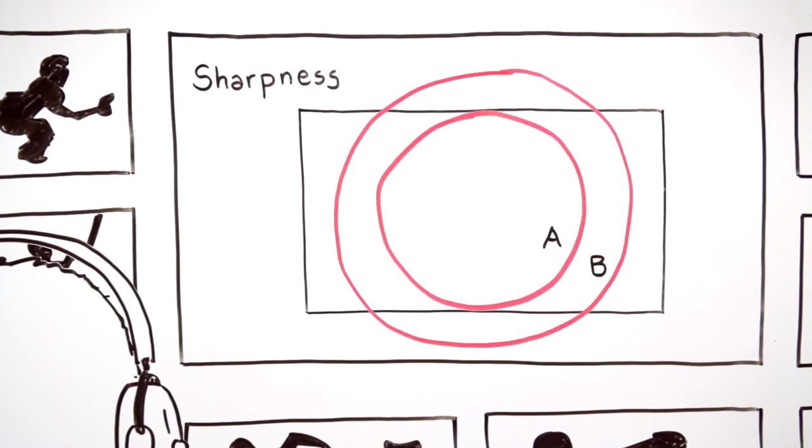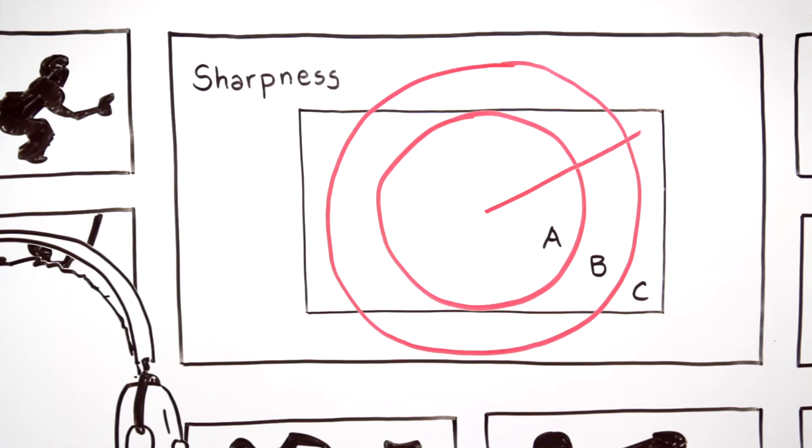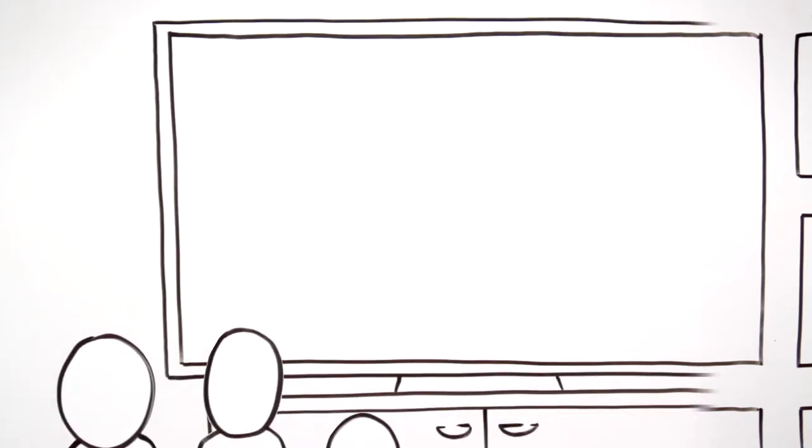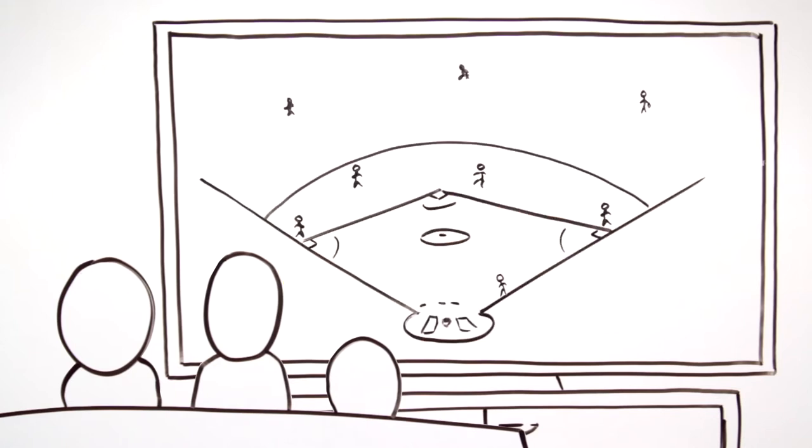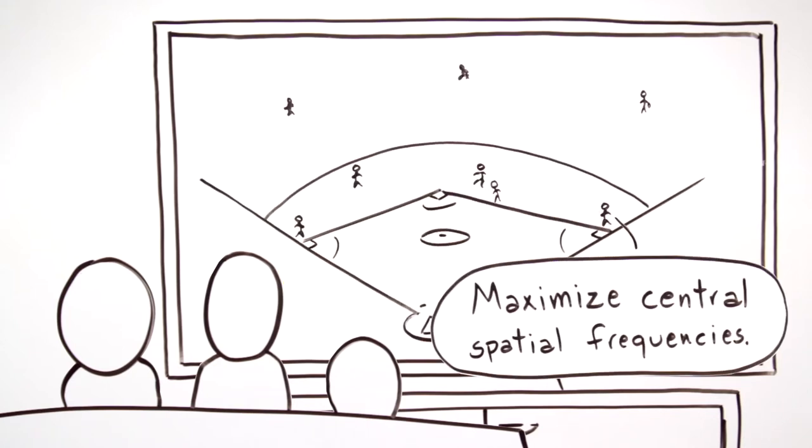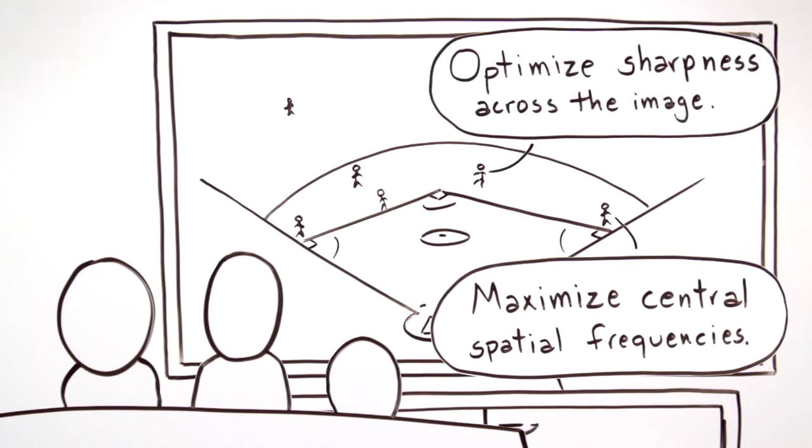MTF also drops off when moving from picture center to the edges. As viewers move to larger 4K UHD displays, it's increasingly important to maximize lens MTF in the central spatial frequencies and to optimize sharpness across the entire image plane.